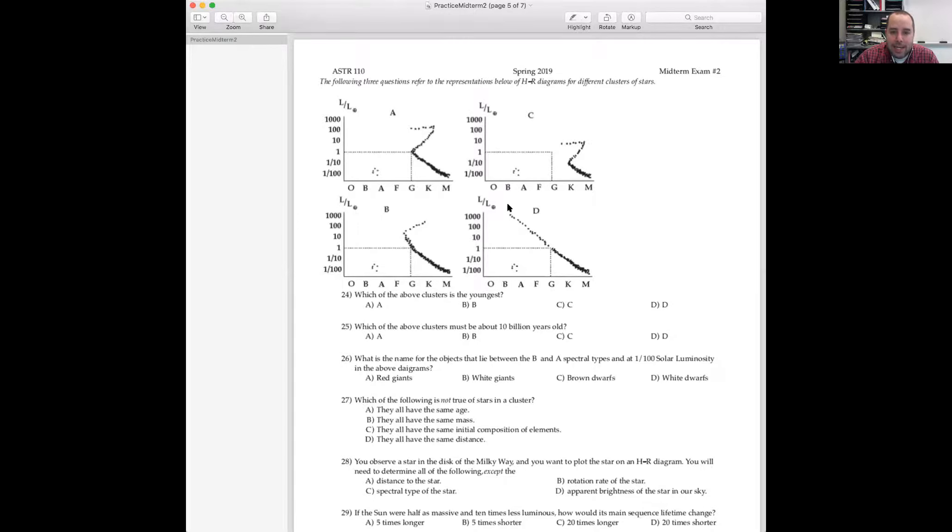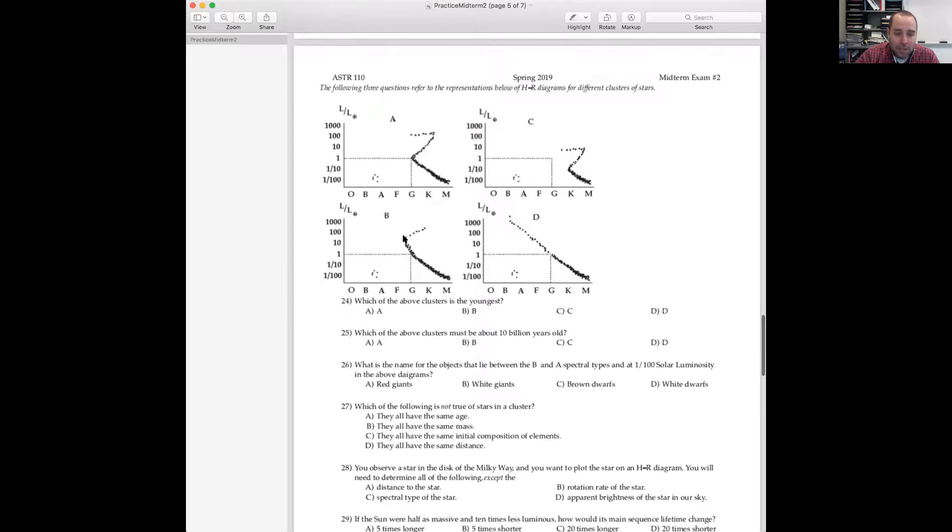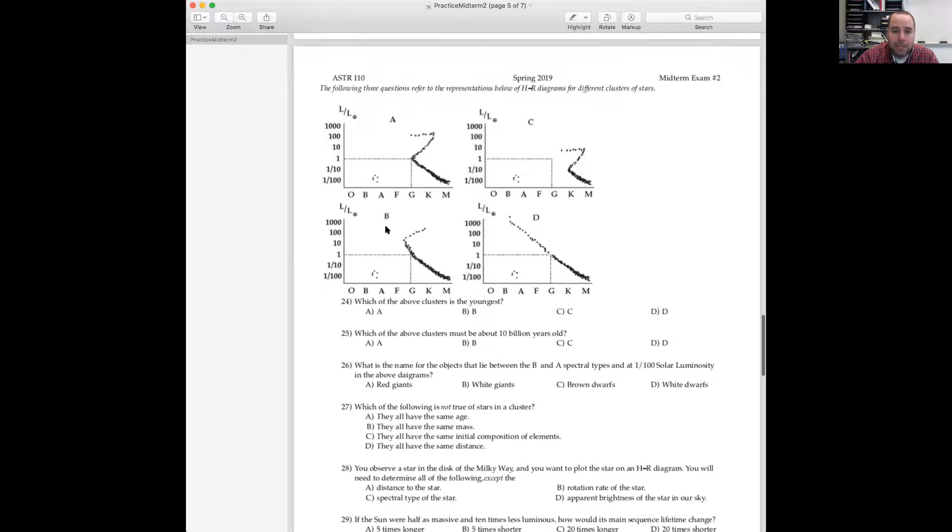B must be the next youngest cluster because it has the next bluest turnoff point. The turnoff point in D is in the B stars. The turnoff point in cluster B is in the F stars. These are lower mass stars that live much longer on the main sequence. And so B must be a little bit older than D. A is a little bit older than that because it's the G stars that are turning off. Cluster C must be the oldest because the K stars are already turning off. You can tell just based on where this turnoff point is, which of these clusters is the youngest in order of youngest to oldest: D, B, A, and then C. So D is the youngest.